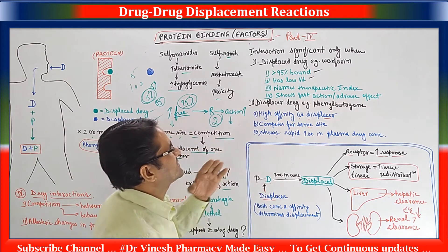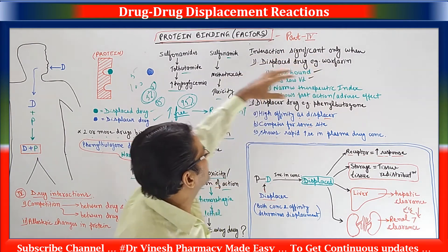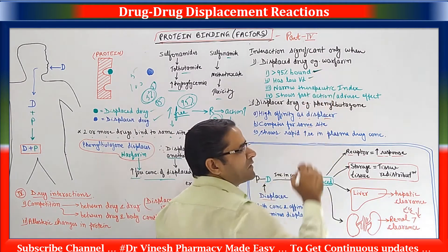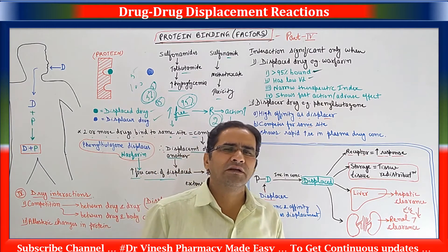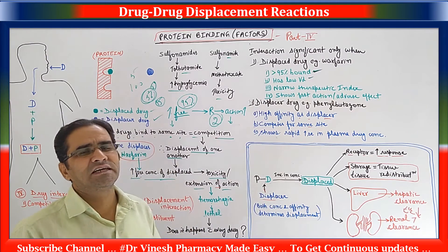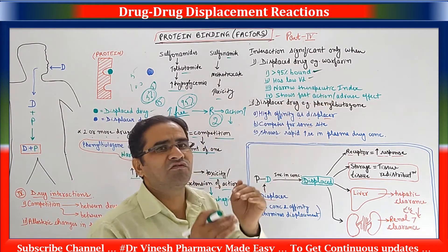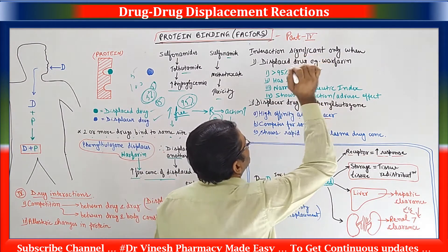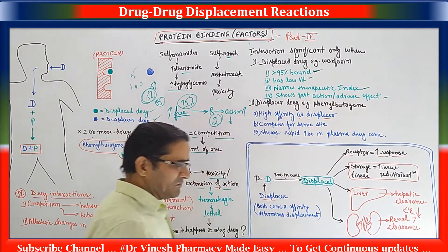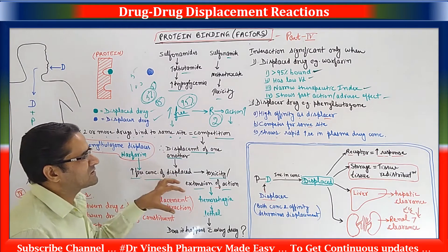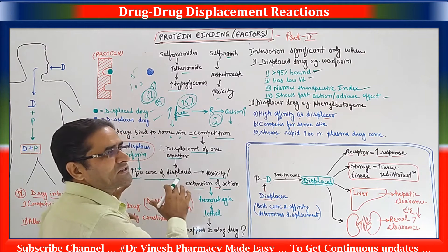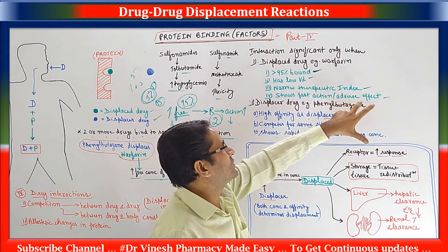What are those characteristics? For the interaction to be significant, the displaced drug — for example warfarin — must be more than 95% protein bound. It must also have a low volume of distribution, meaning the drug remains confined to the blood compartment. Since pharmacological action is related to drug concentration in blood, extension of action will be seen. Third, the displaced drug must show a narrow therapeutic index. Fourth, it shows fast onset of adverse effects — in the case of warfarin, because of its fast onset of action, this kind of interaction is observed. Similarly, the displaced drug should show fast onset.